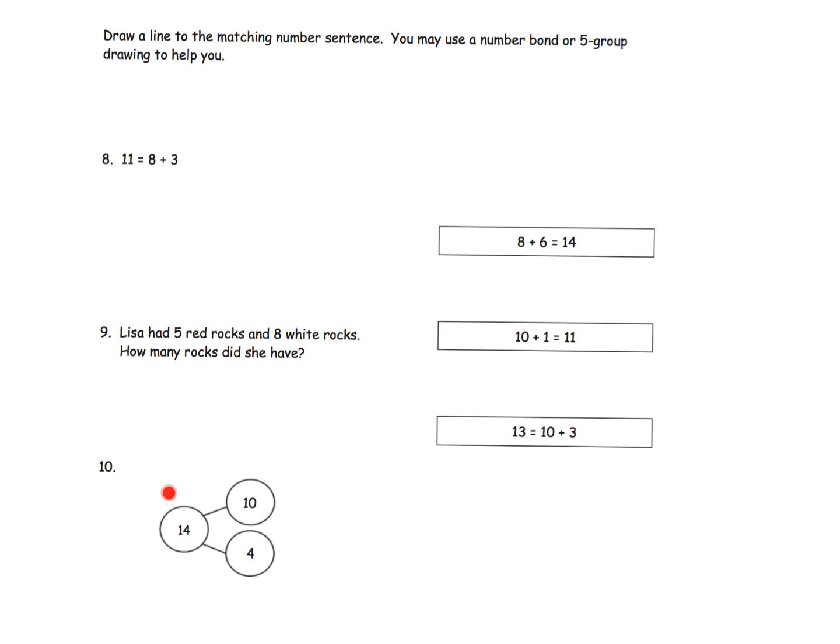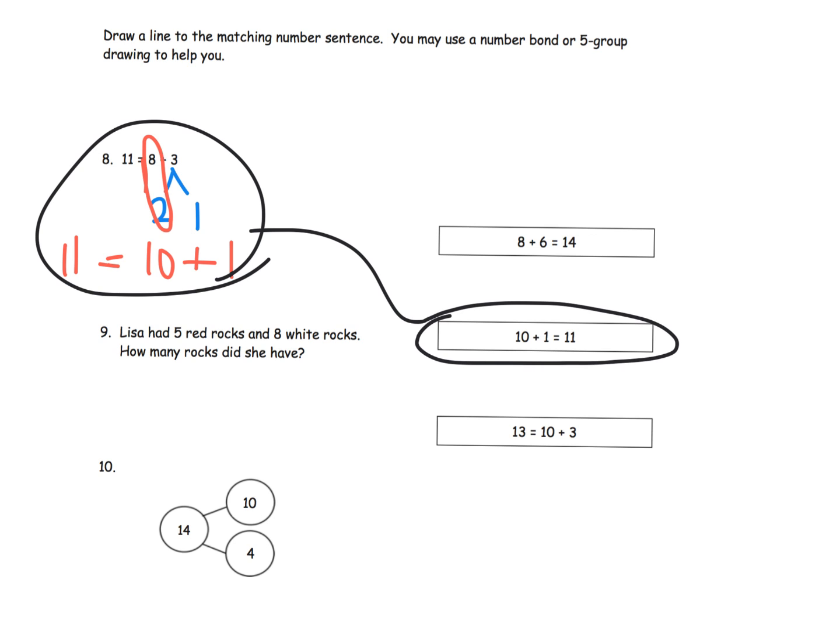So what we need to do is connect each of these three things on the left with one of the three things on the right. All right. So let's take a look at this first problem. And decompose. So I'm going to see, well, let's start with 8 plus 3. So I'm going to leave that 8 alone, and I'm going to decompose the 3 to 2 and 1. And then I can see that 8 and 2 is 10. So we end up with 10 plus 1 is equal to 11. And look at that. This goes right here. And we found a partner.